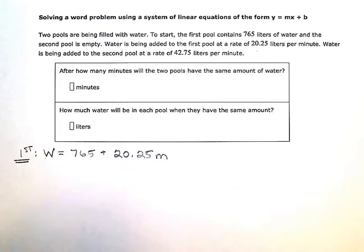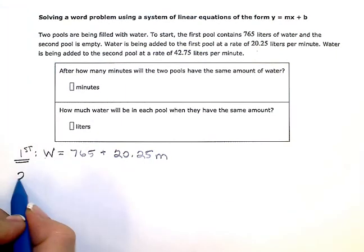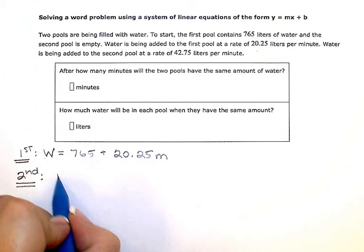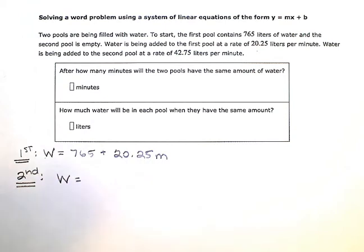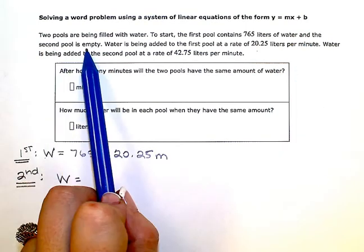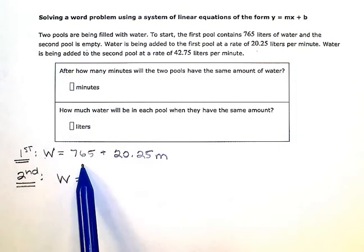Now, my second pool—the amount of water, total amount of water, is going to be equal to—now the second pool started empty, so my start value here is just zero. So I'm not going to put anything right here.